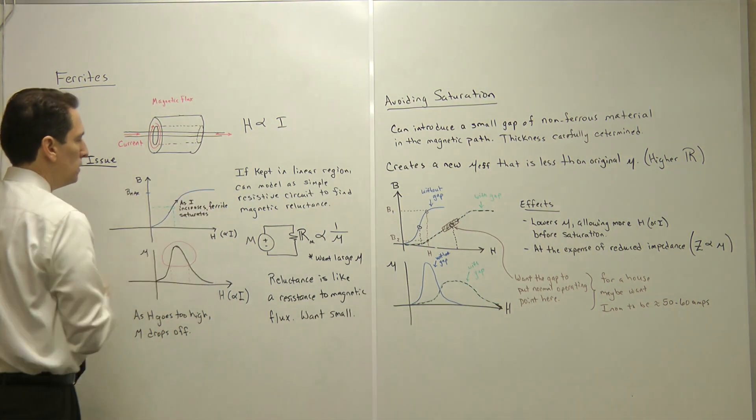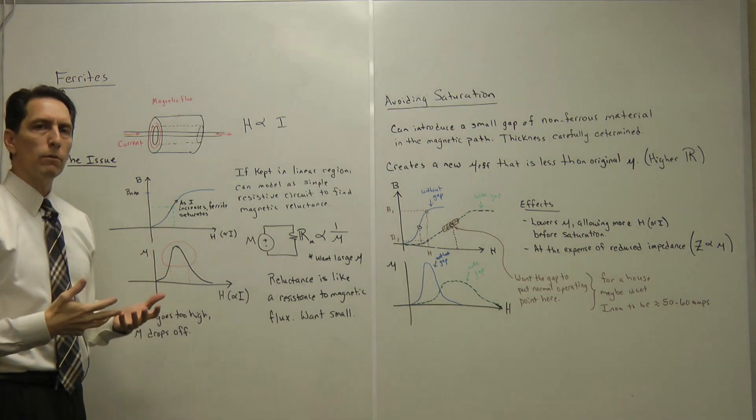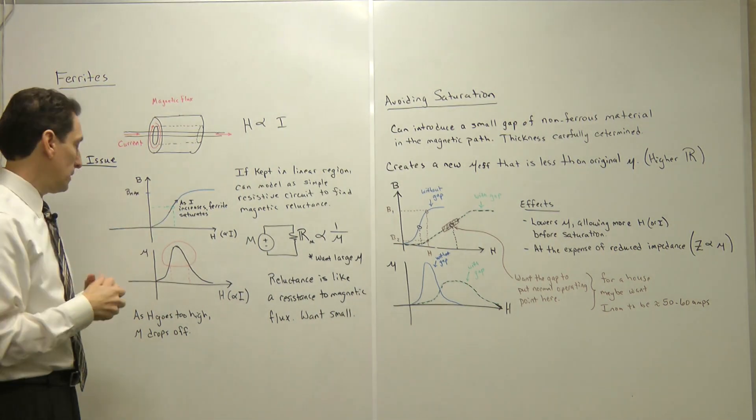If you run it over in this region of saturation, you end up way down here and you end up getting very poor performance from your ferrite, maybe no benefit at all. By performance, we're talking about the ability to suppress those transients.